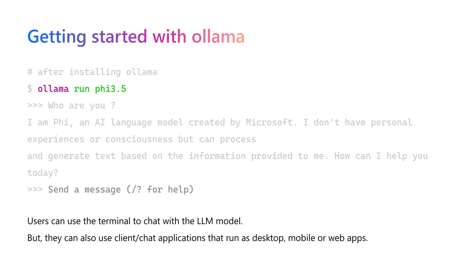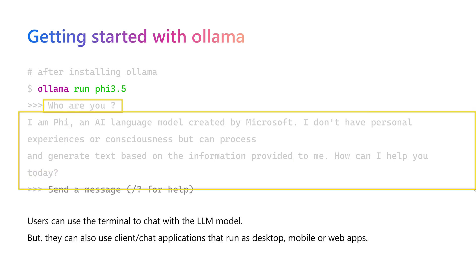After installing Olama on your machine, you use the command line. To run a model, you run 'olama run' followed by the name of the model — in this case, phi3.5. After that you get a prompt in the terminal where you can interact with the model. For example, asking 'who are you' returns a response from the model.